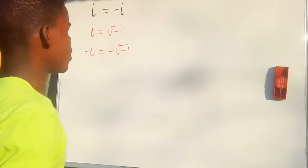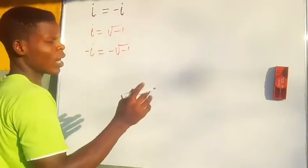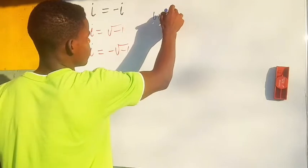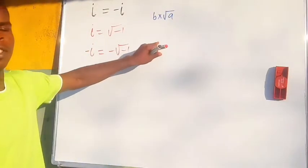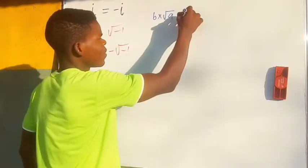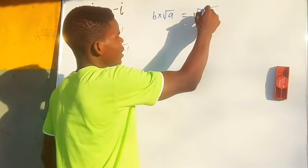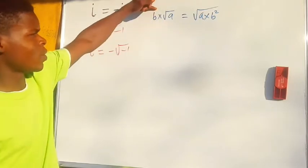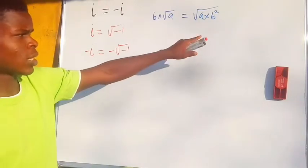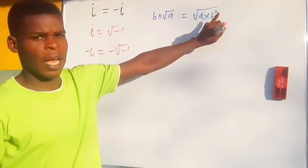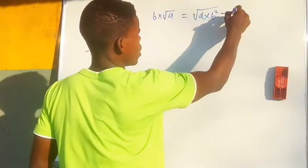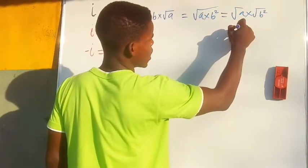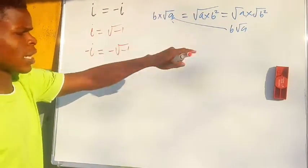Now I want to bring to your notice this algebra rule. If we have two numbers, let's say b times square root of a in solid form, I would say that this is the same thing as the square root of a times b squared. That is to say, if b was outside the square root, you square it to make it a perfect square, then you can put it inside the square root. So square root of b squared gives us b, giving us b times square root of a.